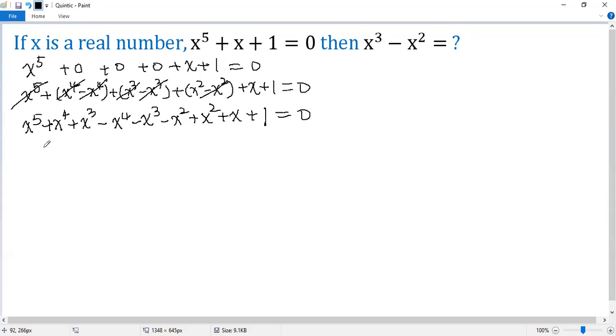Now the greatest common factor for the first three terms is x cubed. We take it out. So we get x cubed, then we get x squared plus x plus 1. For the second three terms, the greatest common factor is negative x squared. So we get x squared plus x plus 1 equals 0. For the last three terms, we just write as 1 times x squared plus x plus 1 equals 0.